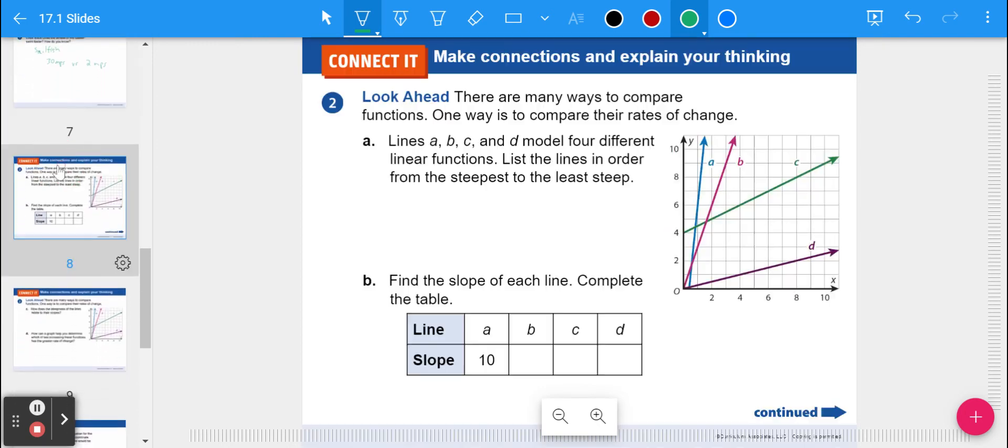I'd like you to look at one other example. This is number 2. It has to do with graphs. Just a whole bunch of lines on a graph. And this is comparing multiple different representations on the same format, on the same graph. So it says lines A, B, C, and D model four different linear functions. List the lines in order from steepest to least steep. So think about steep. The steeper you go, the harder it is to get up a hill. So you can just look at what's steepest. That also will have to do with the slope. So A is the steepest. B is the next steepest. C is the next steepest. And D is the least steep because it's the closest to being flat or straight left and right.